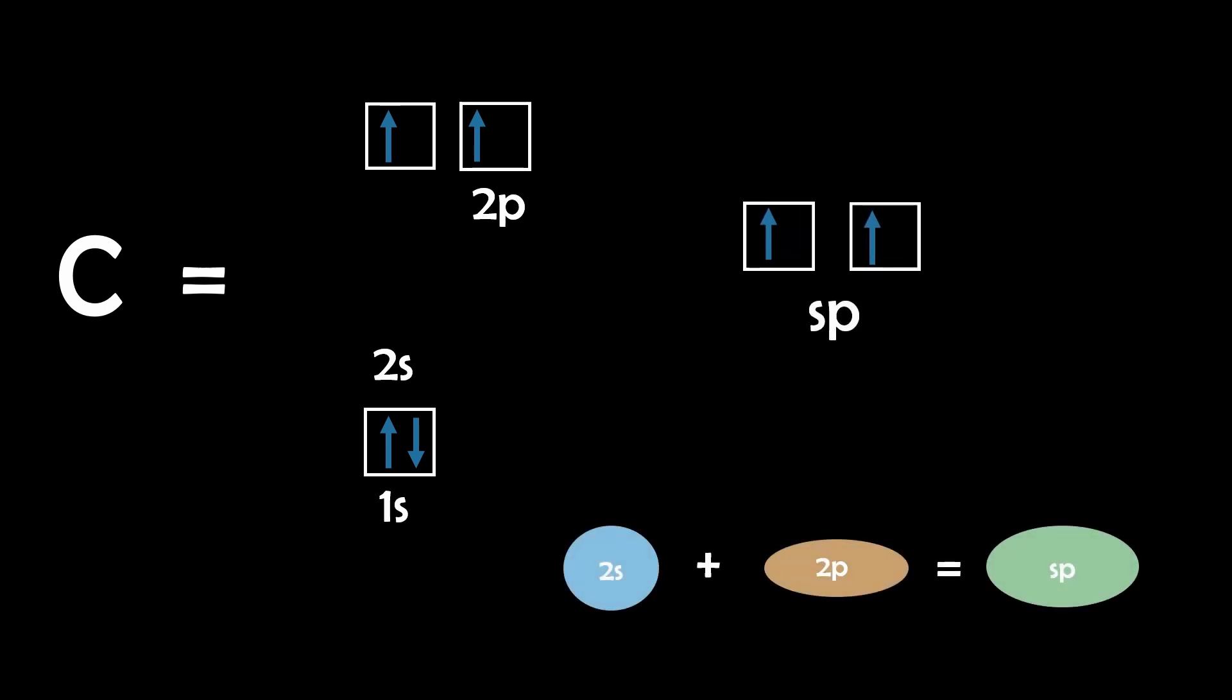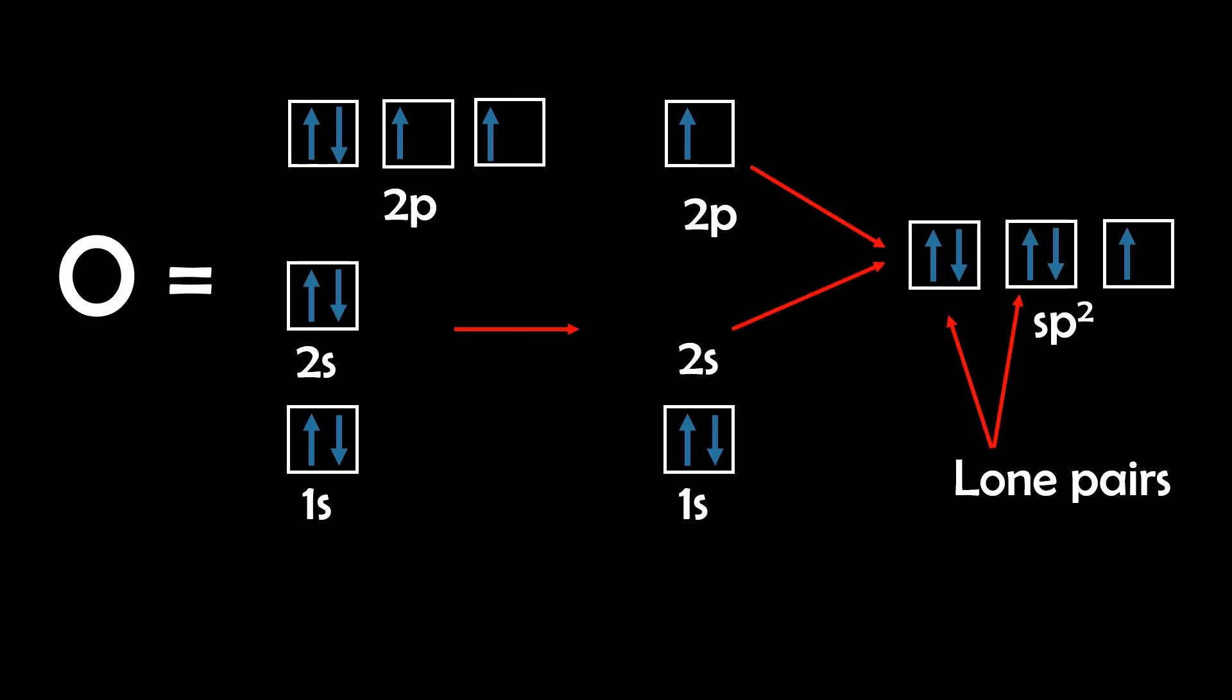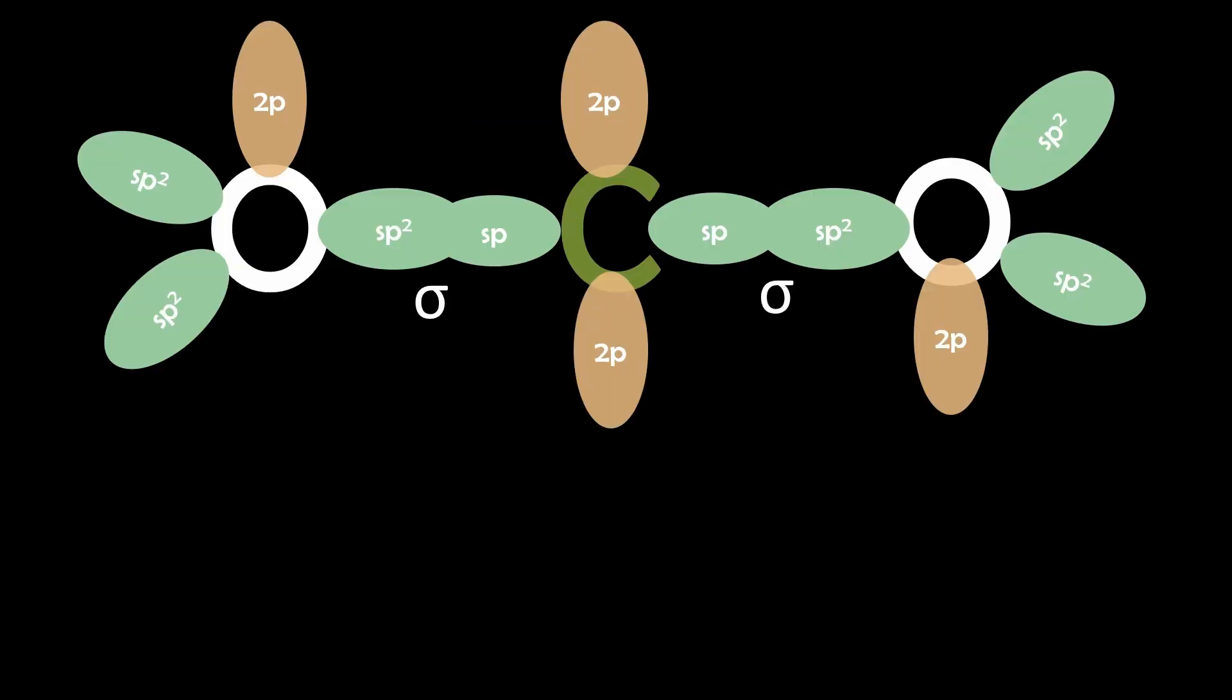And a similar process occurs for oxygen, because to form bonds with carbon's SP orbitals, oxygen must also have hybridized orbitals of comparable energy. So this leads to the formation of SP2 hybrid orbitals in oxygen, which I will explain in detail shortly.